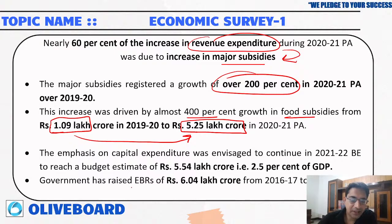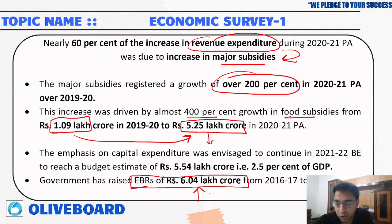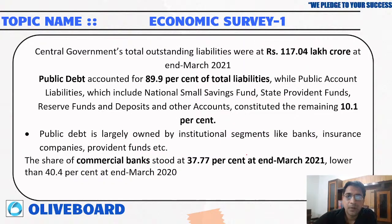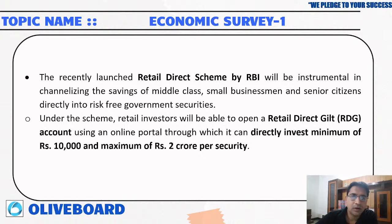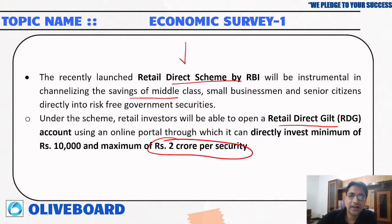The government raised extra budgetary resources of rupees 6.04 lakh crore, which is around 2.5 percent of GDP. The central government's total outstanding liabilities are rupees 117.04 lakh crore, of which public debt constitutes 89.9 percent. The share of commercial banks stood at 37.77 percent. Under the RBI's Retail Direct Scheme, retail investors can open a Retail Direct Gilt account through an online portal and directly invest a minimum of rupees 10,000 and a maximum of rupees 2 crore per security.